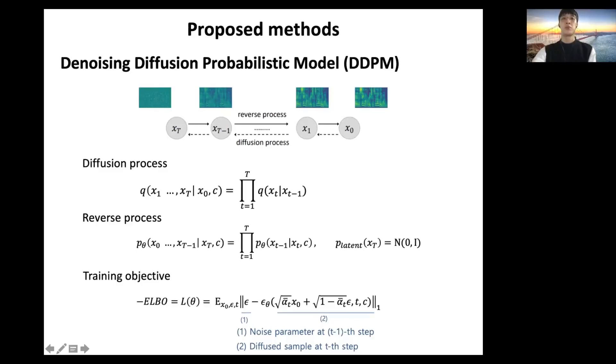The second one is the reverse process. The reverse process is a mel spectrogram generation procedure conditioned on text. Diff-TTS is optimized through an ELBO-based objective function which is the L1 distance between the output of the model and Gaussian noise at the T-1 step.